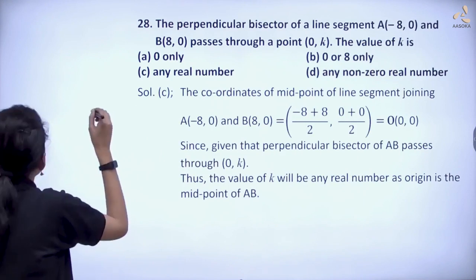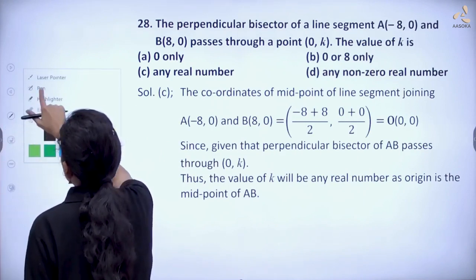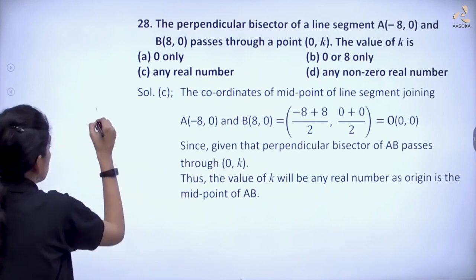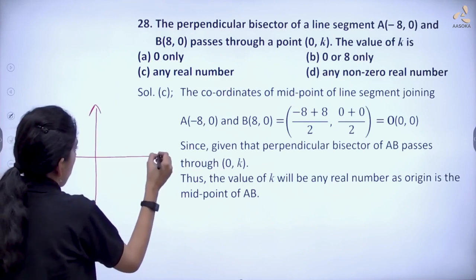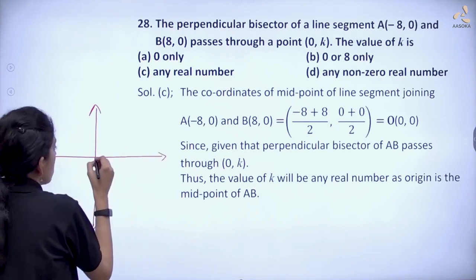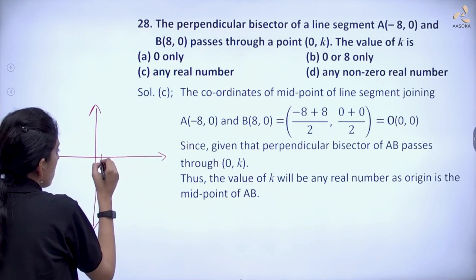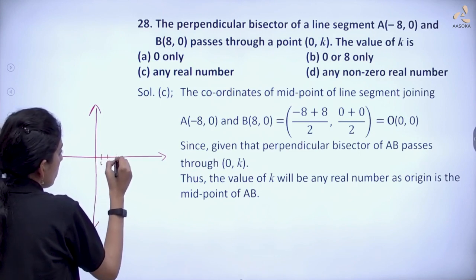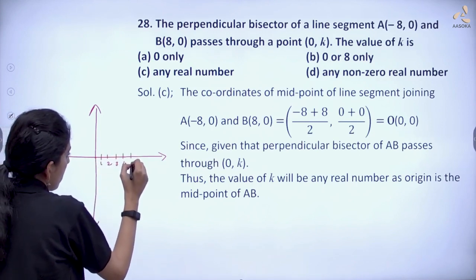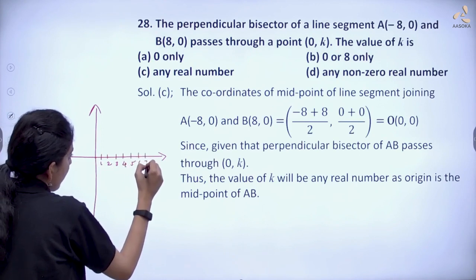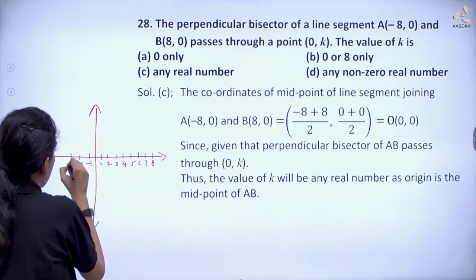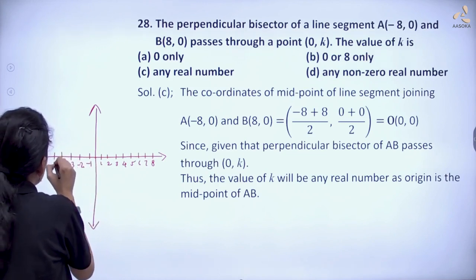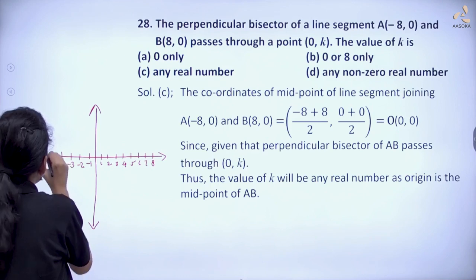Let's plot these points on the coordinate axis. This is origin: 1, 2, 3, 4, 5, 6, 7, 8, and minus 1, minus 2, minus 3, minus 4, minus 5, minus 6, minus 7, minus 8.